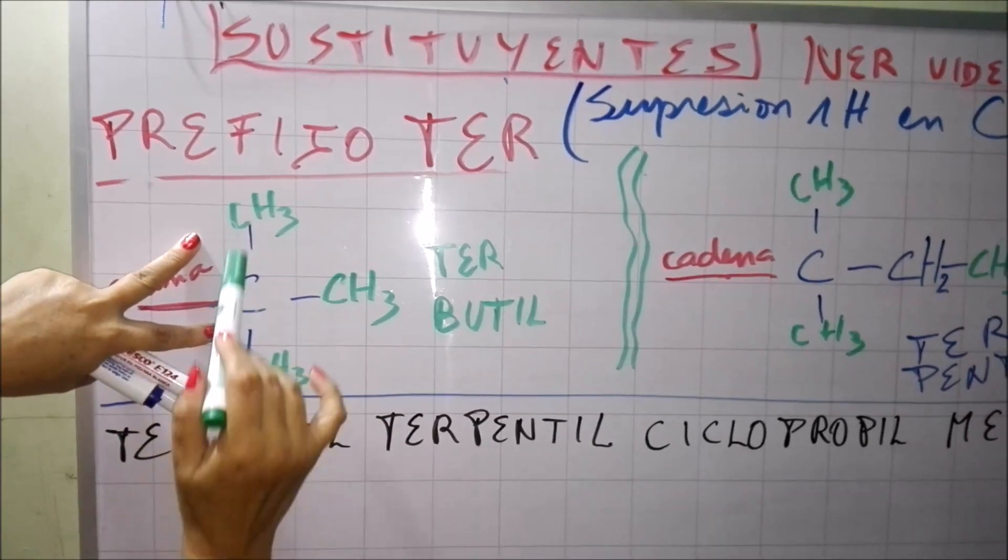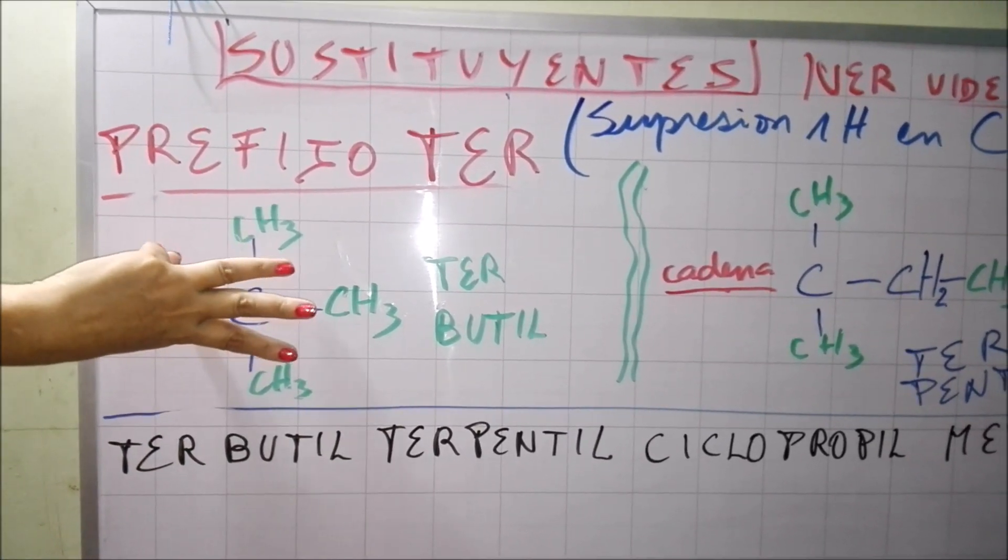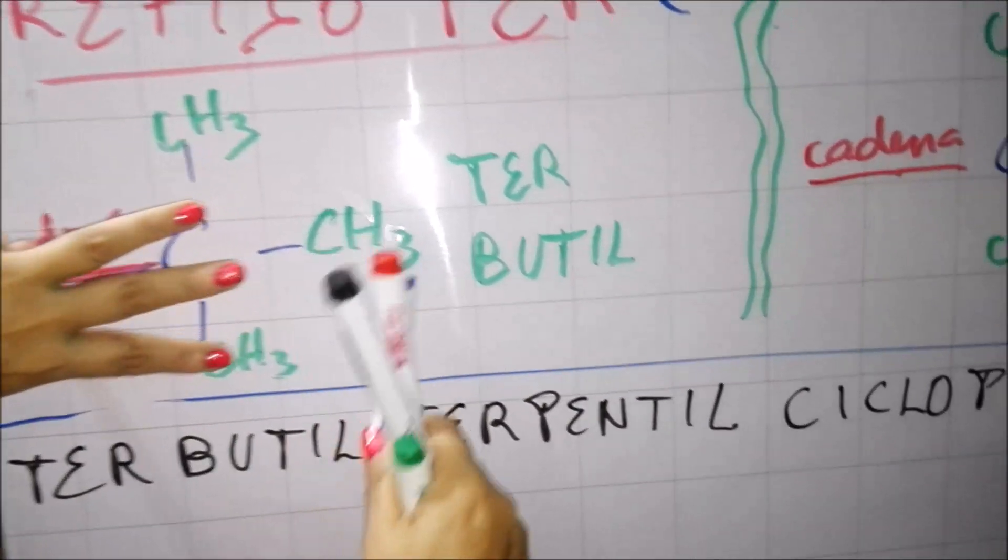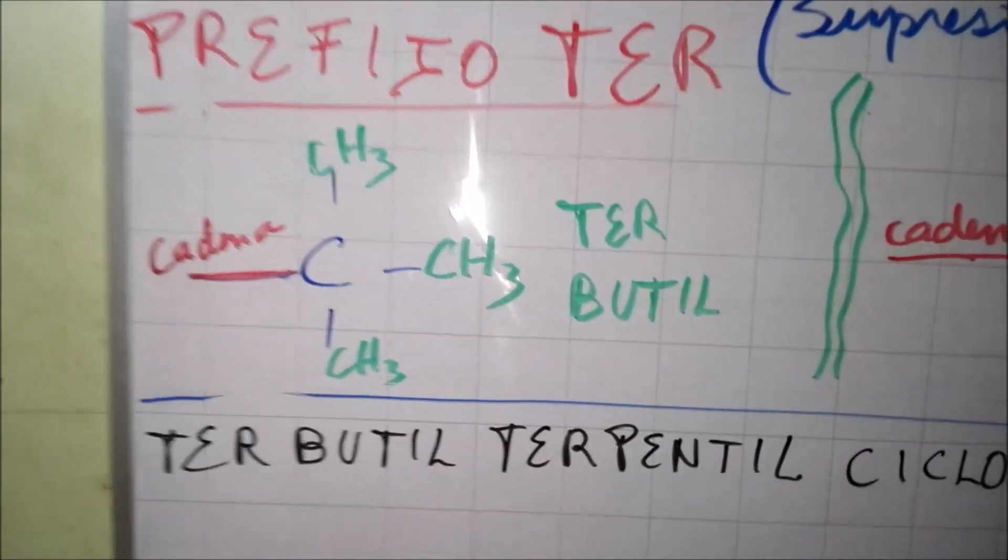1, 2, 3 y 4, y mira la disposición que tiene siempre a finales. Vas a tener 3 carbonos con CH3, siempre en carbonos extremos vamos a tener CH3.